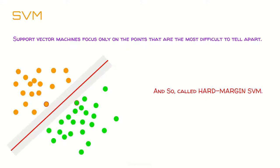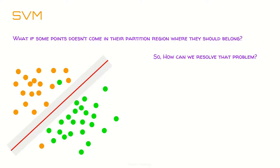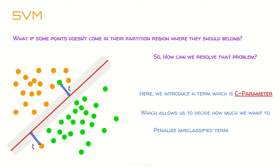This is called the hard margin SVM — we get no errors, every point belongs to its correct class, green or orange. But what if we have a misclassified point — a green dot that ends up on the wrong side? The computer doesn't understand it's misclassified. That's where the soft margin comes in. We introduce a parameter called the C parameter, which allows us to decide how much we want to penalize misclassified points.